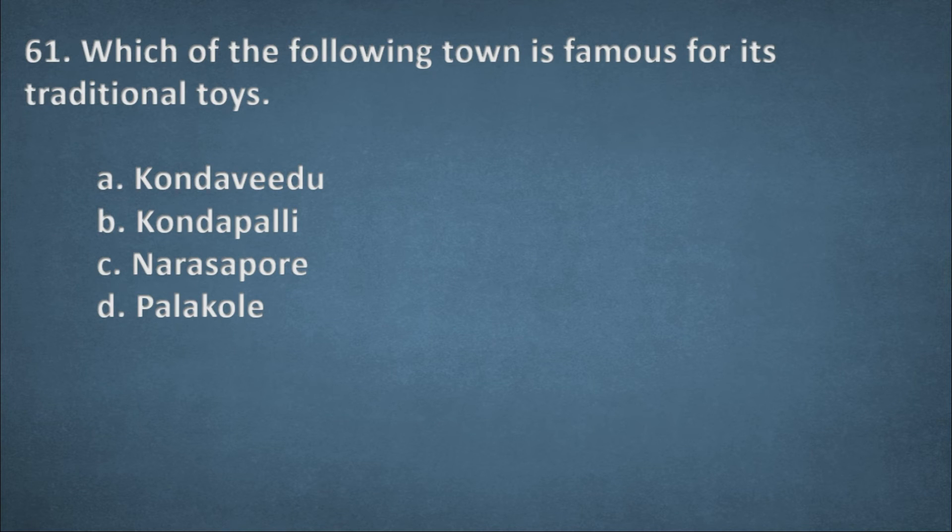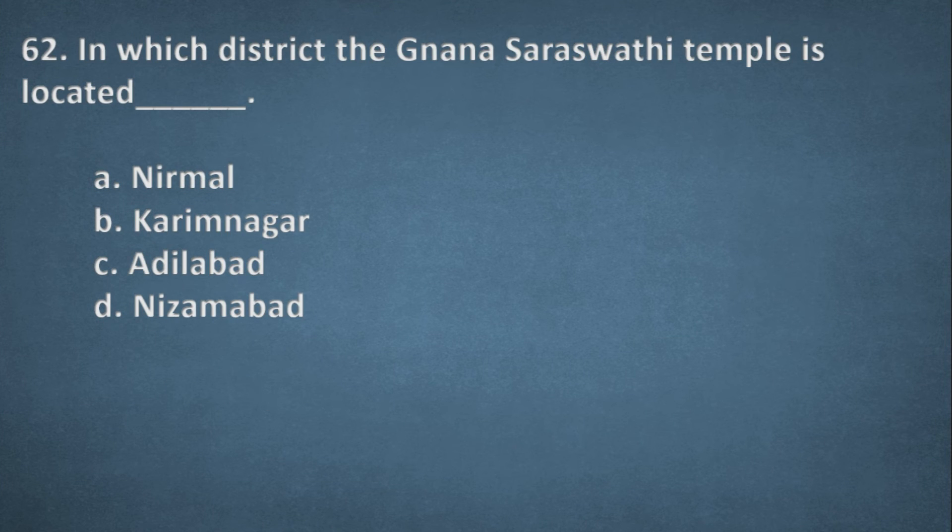Next one. Which of the following towns is famous for its traditional toys? Options: Kondavidu, Kondapalli, Narsapuri, Palakollu. The right option, B, Kondapalli. Next one. In which district the Gnana Saraswati temple is located? Options: Nirmal, Karimnagar, Adilabad, Nizamabad. The right option, Option A, Nirmal.